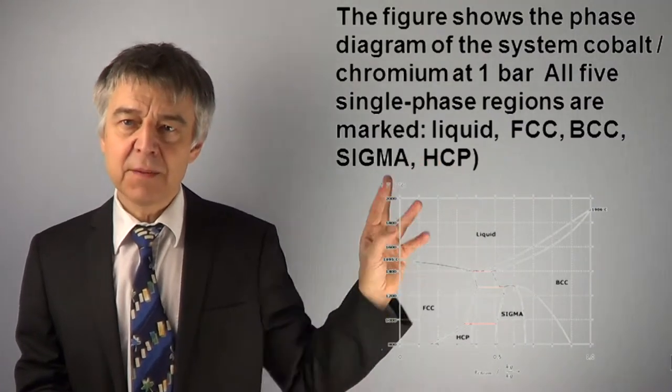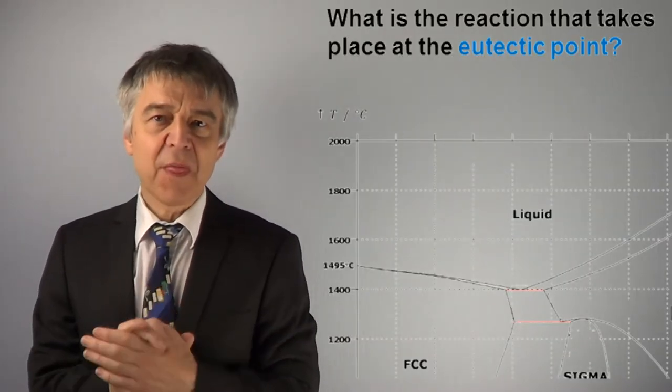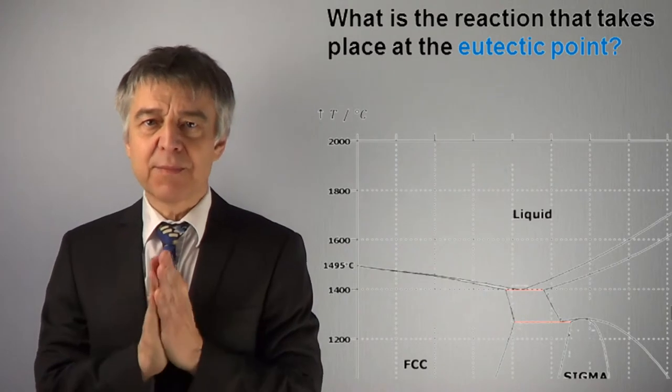FCC, BCC, SIGMA, and HCP. What is the reaction that takes place at the eutectic point?